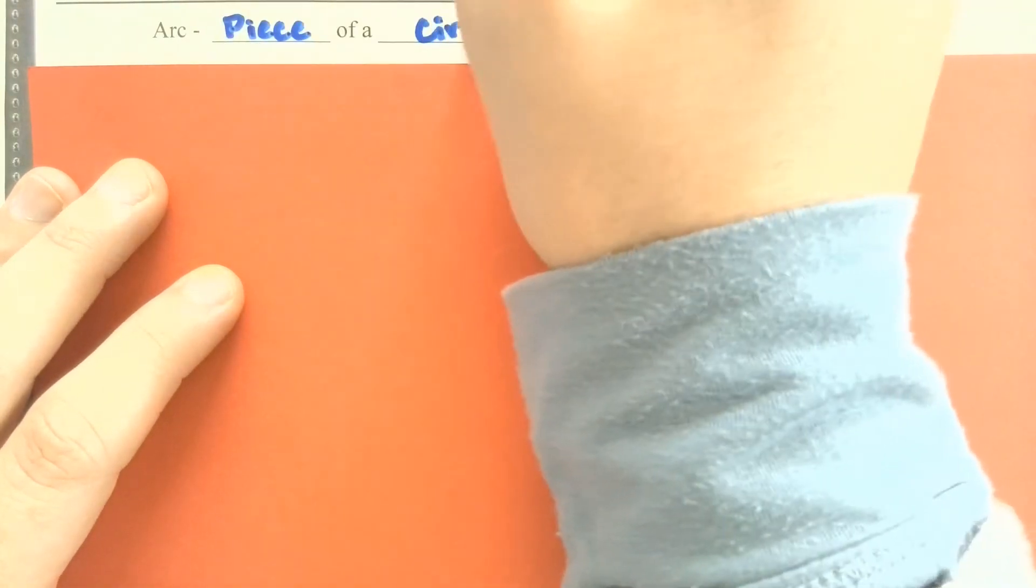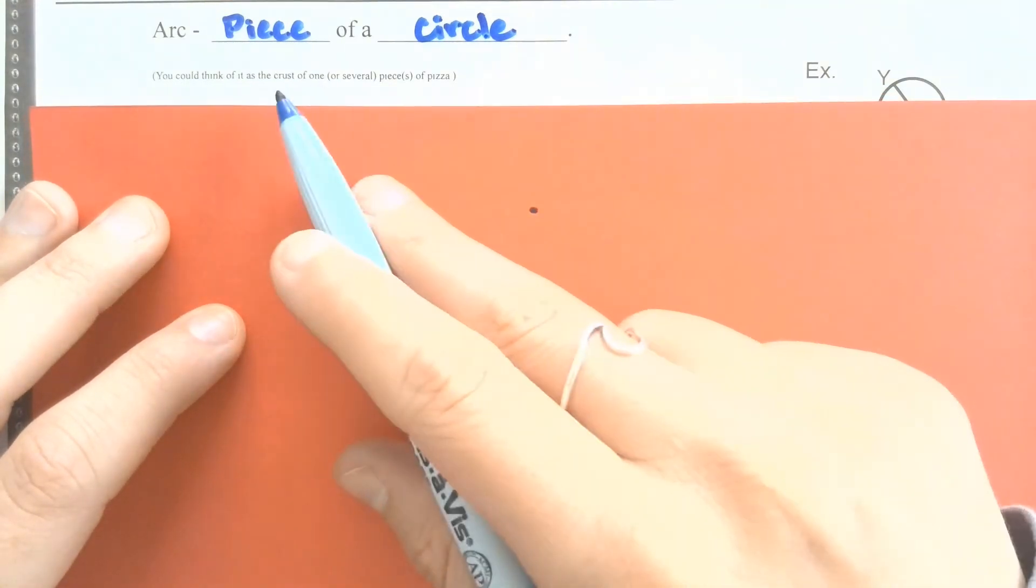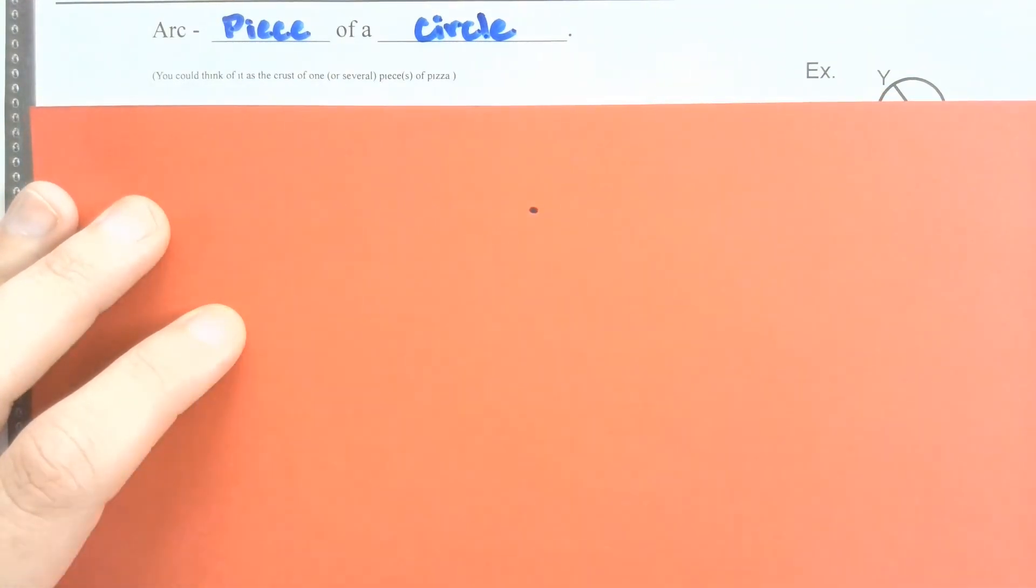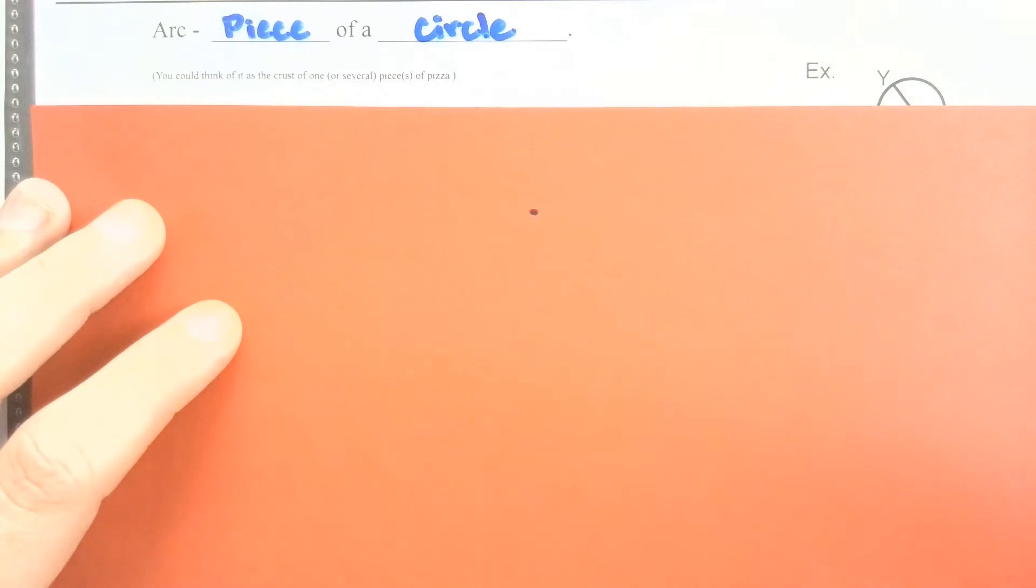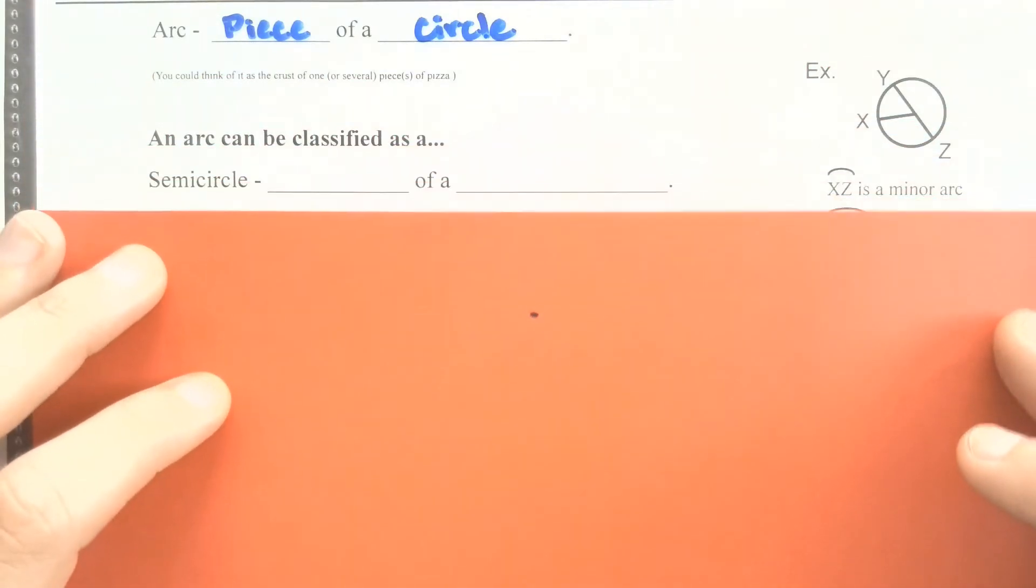The part that we're going to focus on today are arcs of a circle, and an arc is really just a piece of a circle. I'm not talking about the interior of the circle here. Think more of it as the crust of pizza or of several pieces of pizza. We're just talking about that outer piece, and that arc is a piece of that. You could also say that it's like a piece of the circumference.